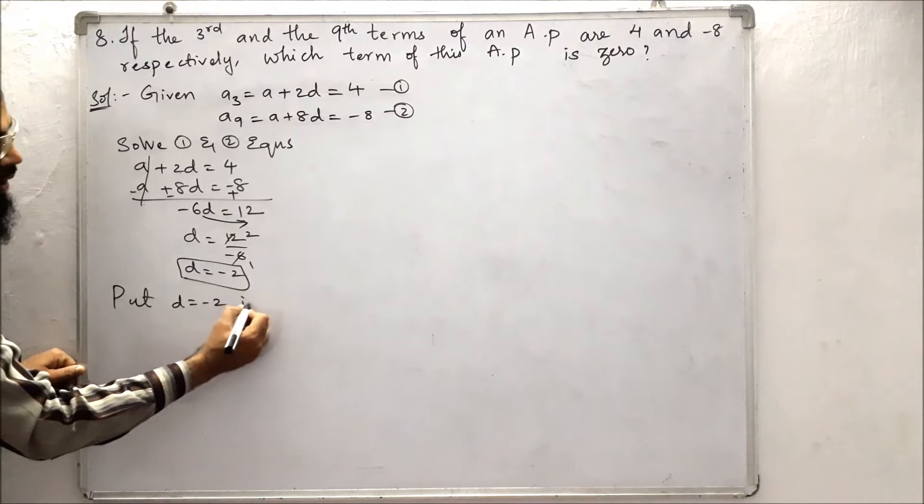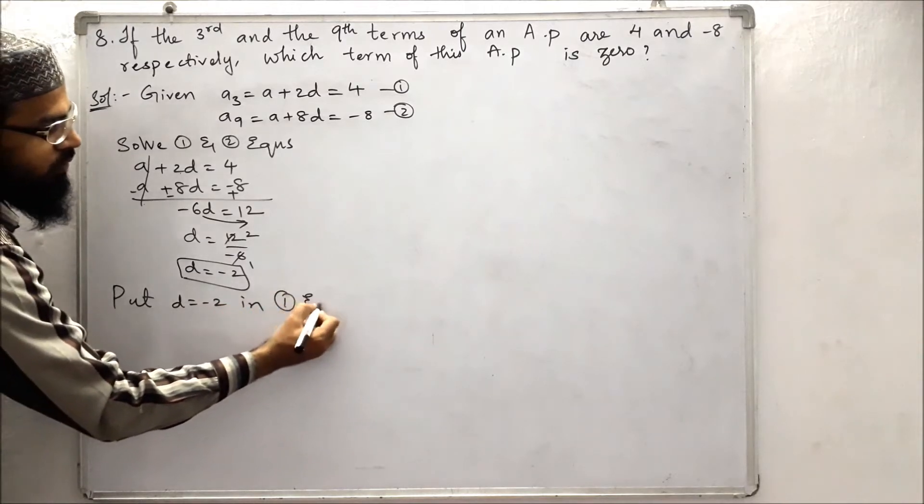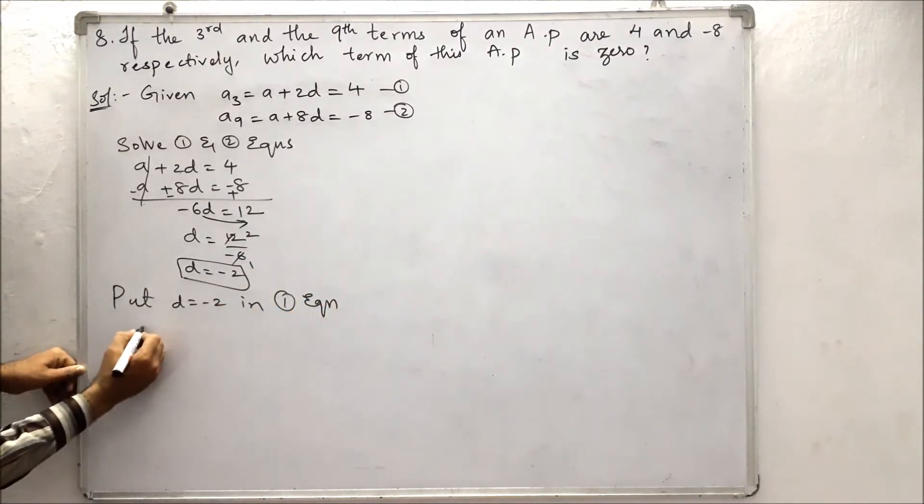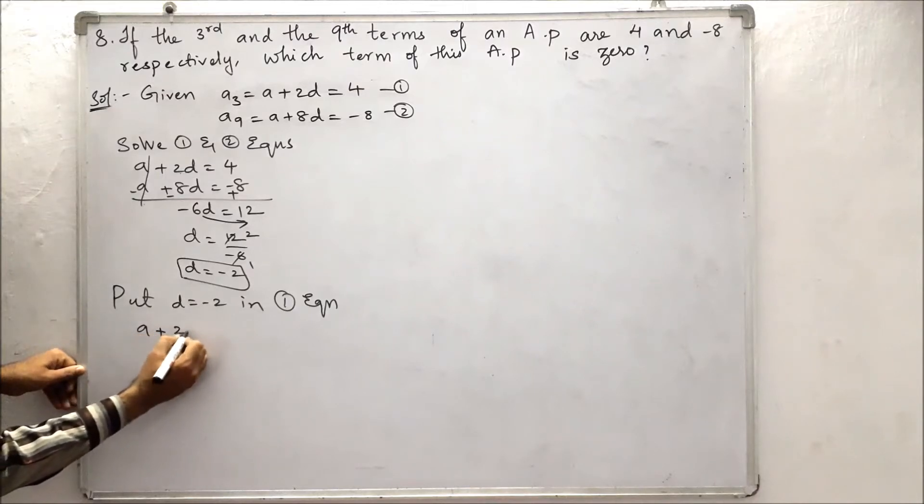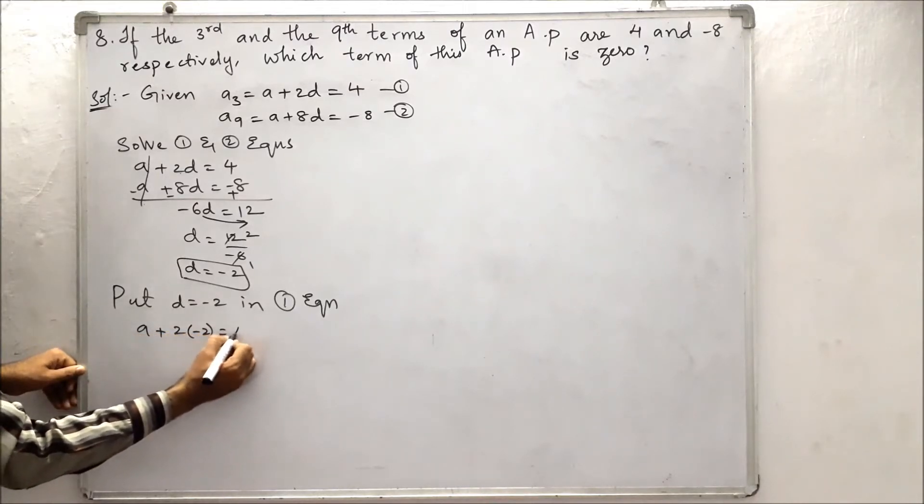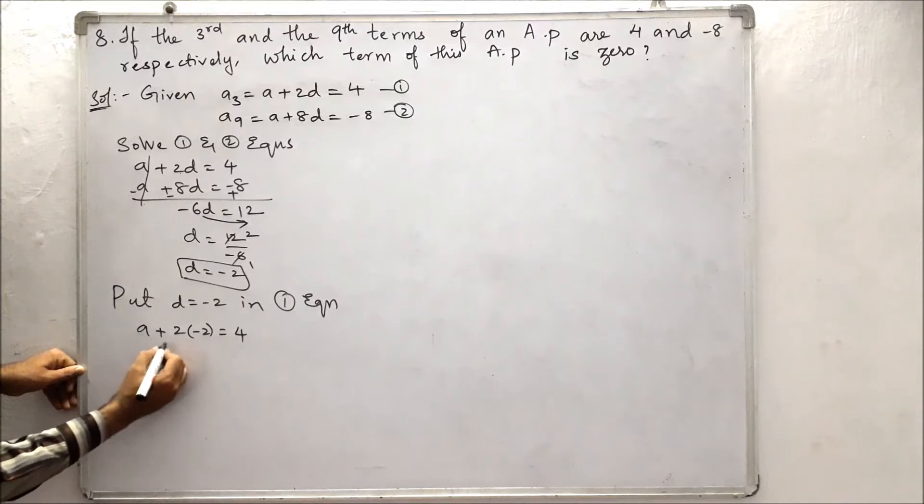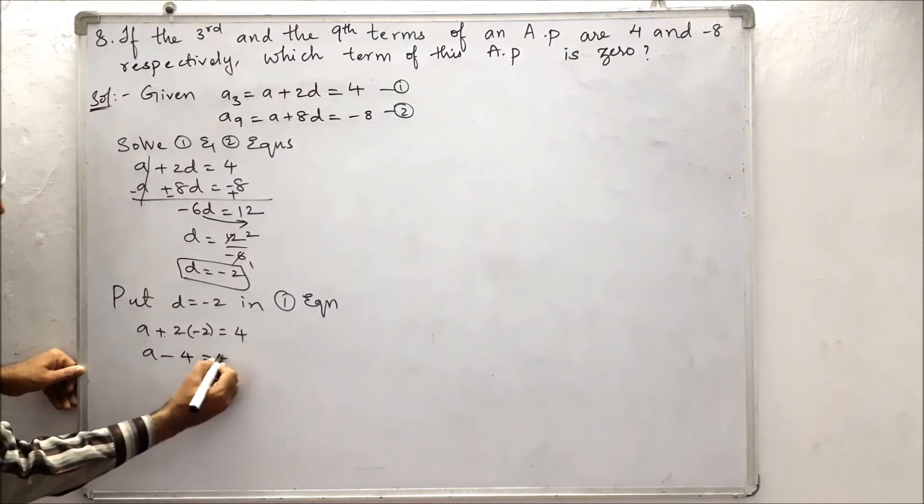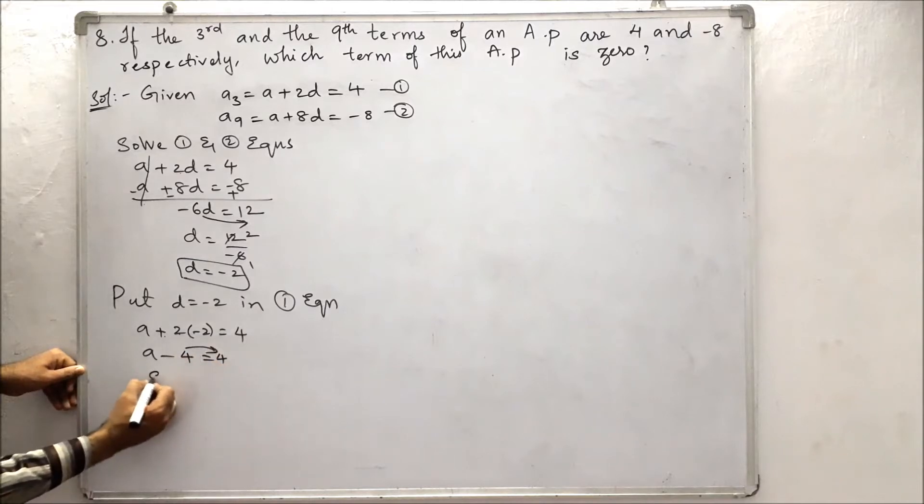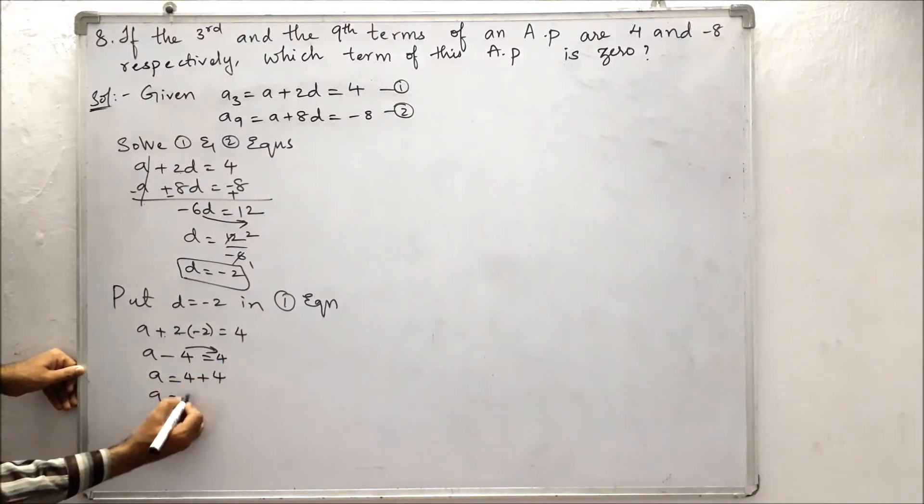Put d is equals to minus 2 in the first equation. So that is a plus 2 times minus 2 is equals to 4. A minus 4 is equals to 4.